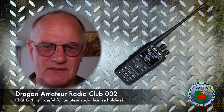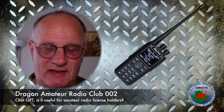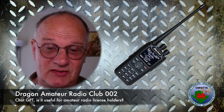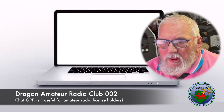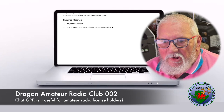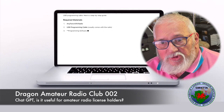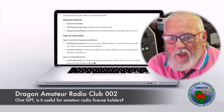Hi David, I've got a question for you. I've bought myself an AnyTone 878 radio and I haven't got any idea how to programme it. Have you got any ideas? I think I can help you a little bit. To set the computer up first, you'll probably need to install the CPS software. You download the CPS software.